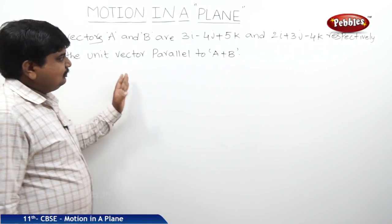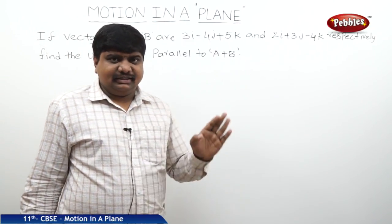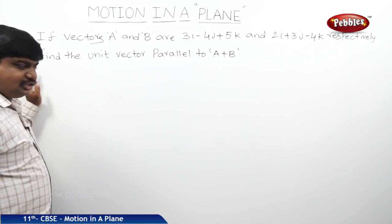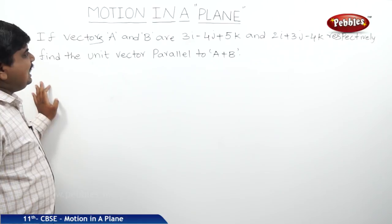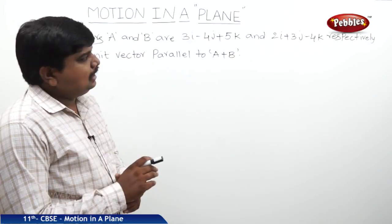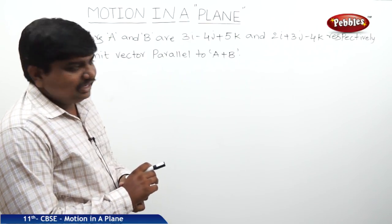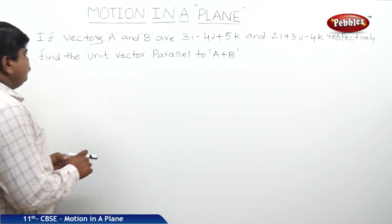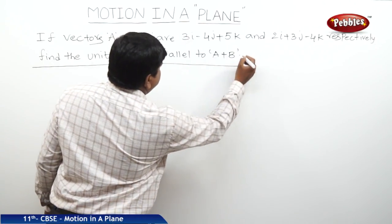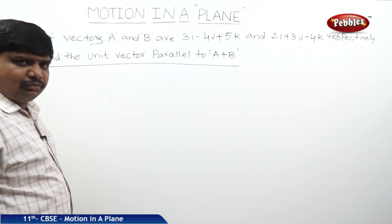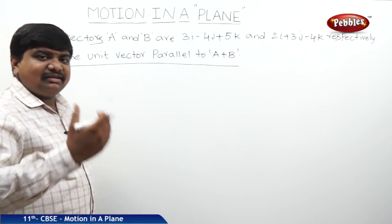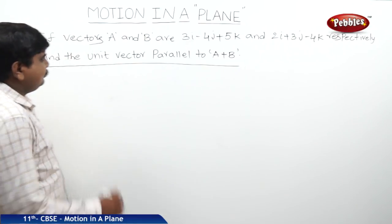This numerical is based on the concept of unit vectors and their resolution of the vectors. You see the concept in this numerical, if vectors a and b are represented by 3i minus 4j plus 5k and 2i plus 3j minus 4k respectively, find the unit vector parallel to a plus b. Before we are going to find out the parallel vector which is to a plus b, we should find the resultant of a and b vectors.